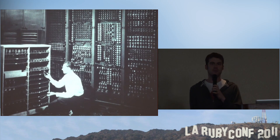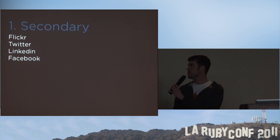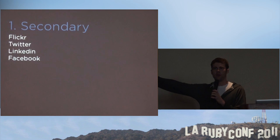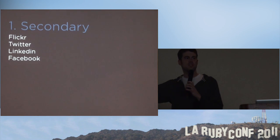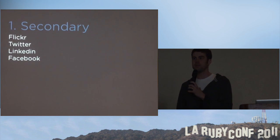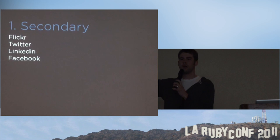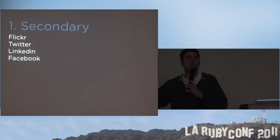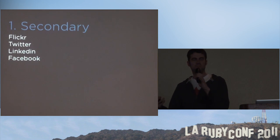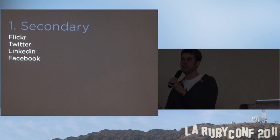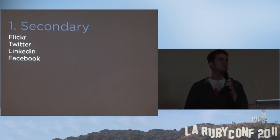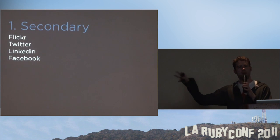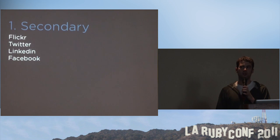Let's look at some different categories of APIs. The first category is what I call secondary APIs — things where the application works without the API; the API just extends the functionality. So you can use Flickr on its own, but Flickr opened up all that functionality via API, which lets you do more and more powerful things with it.